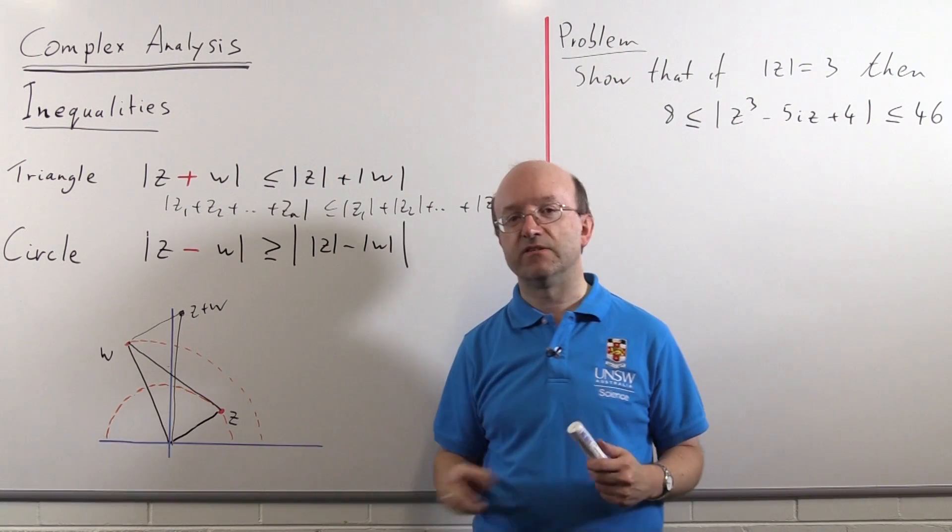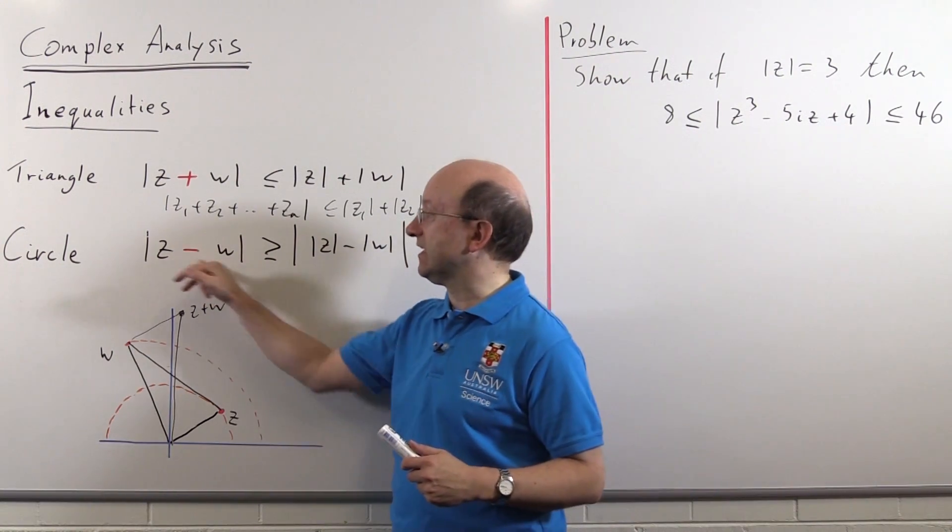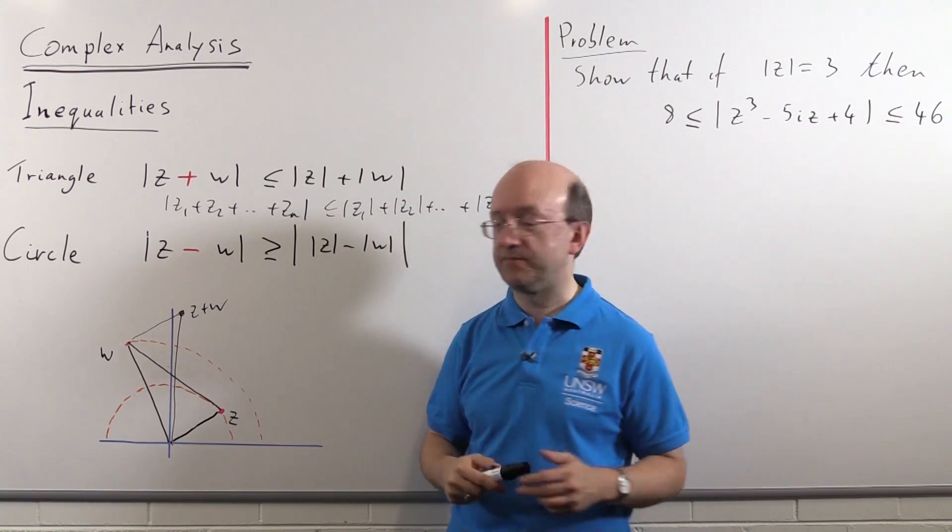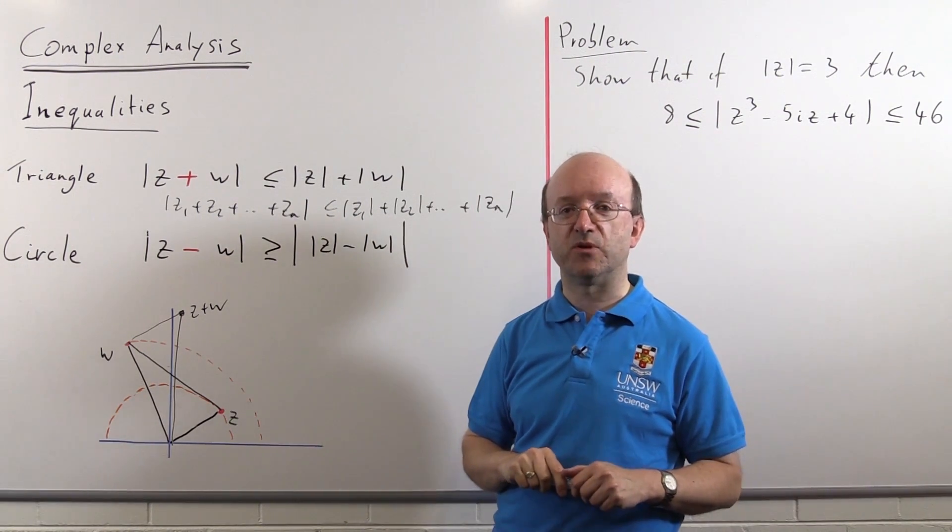Proofs quite straightforward because you just apply the triangle inequality several times. The circle inequality on the other hand doesn't generalize. If you've got three things here to use a circle inequality for, you have to be a bit cleverer about what you do. I'm going to show you what we do in that case when we come to the problem.